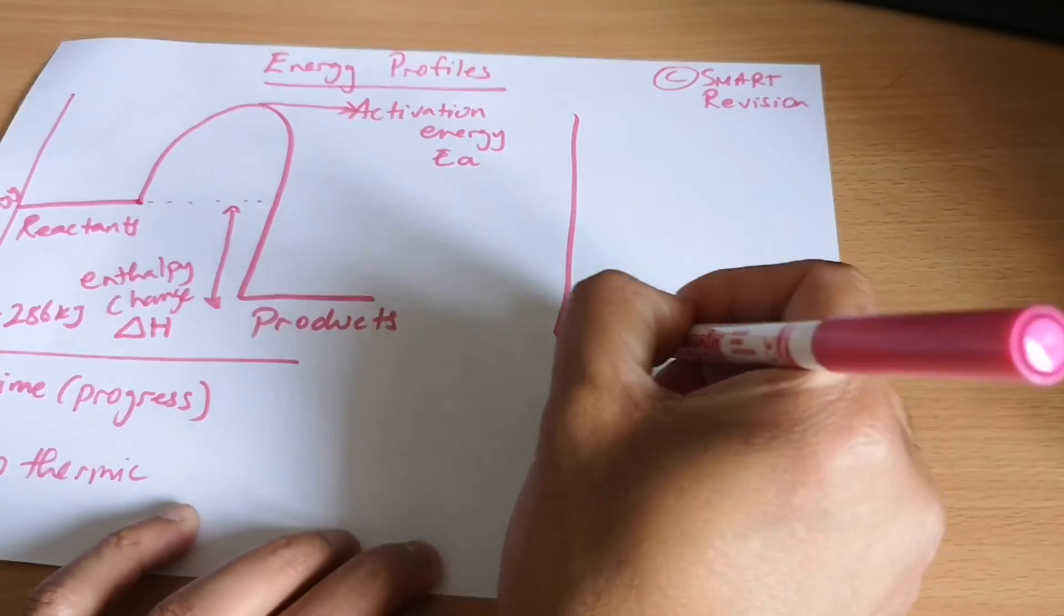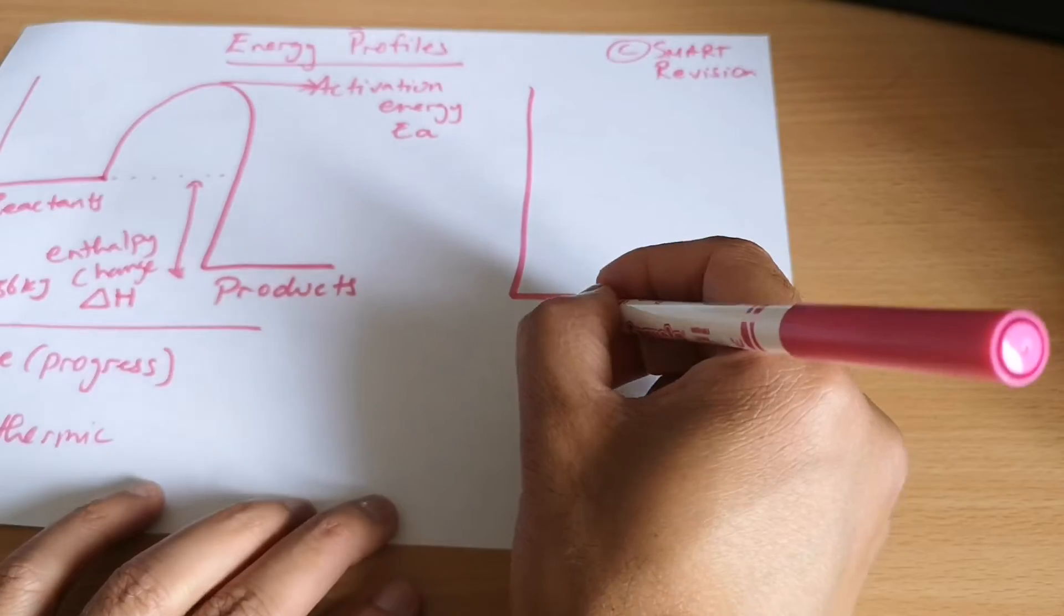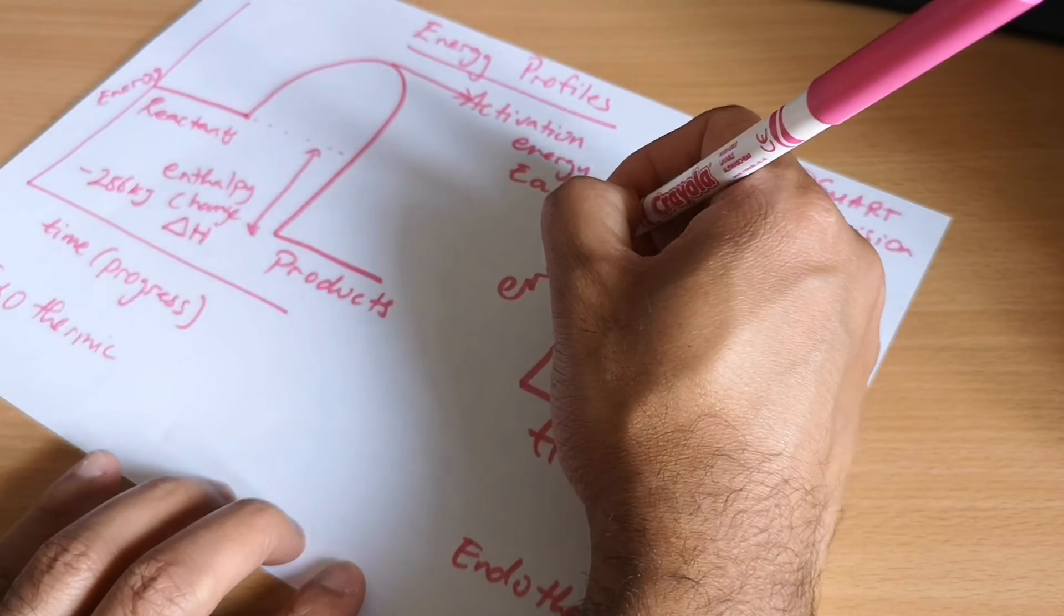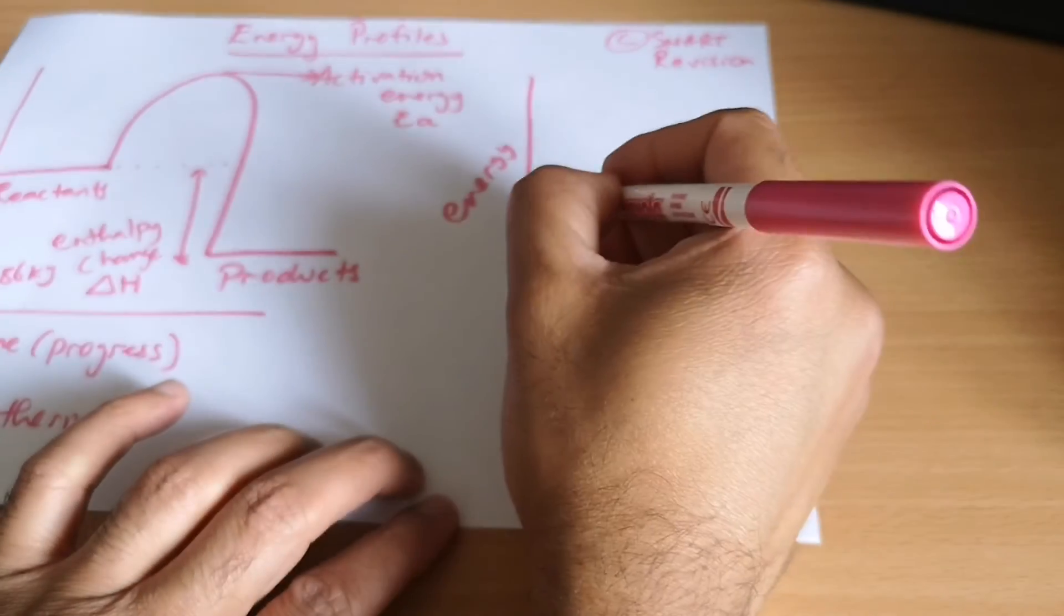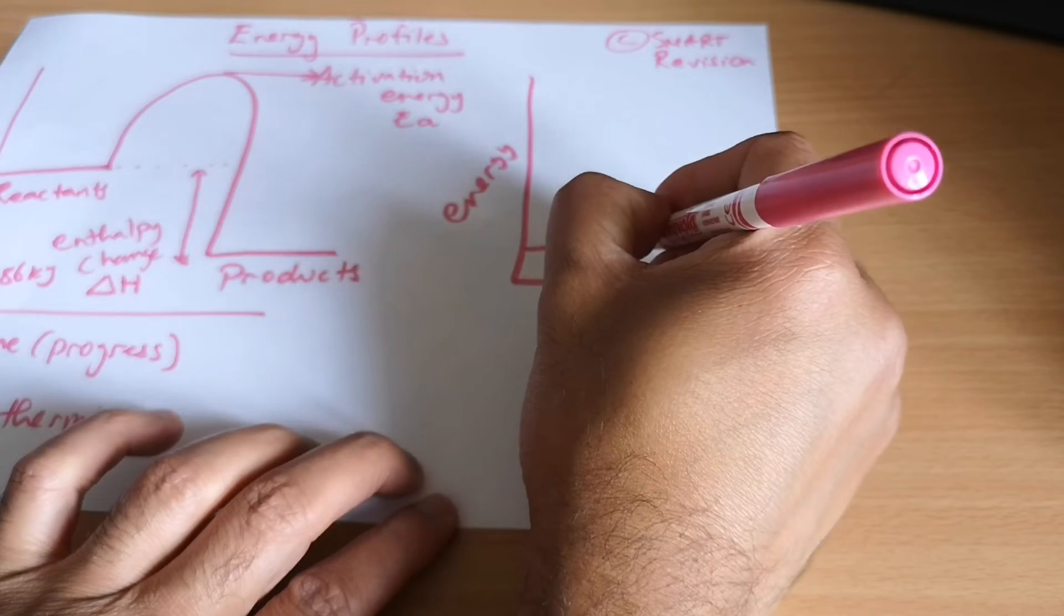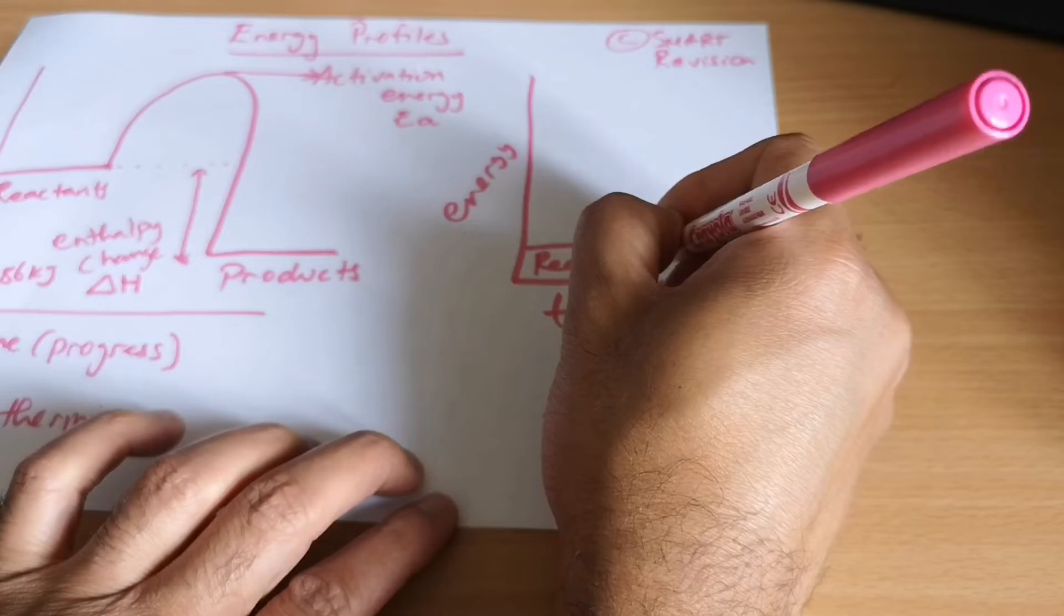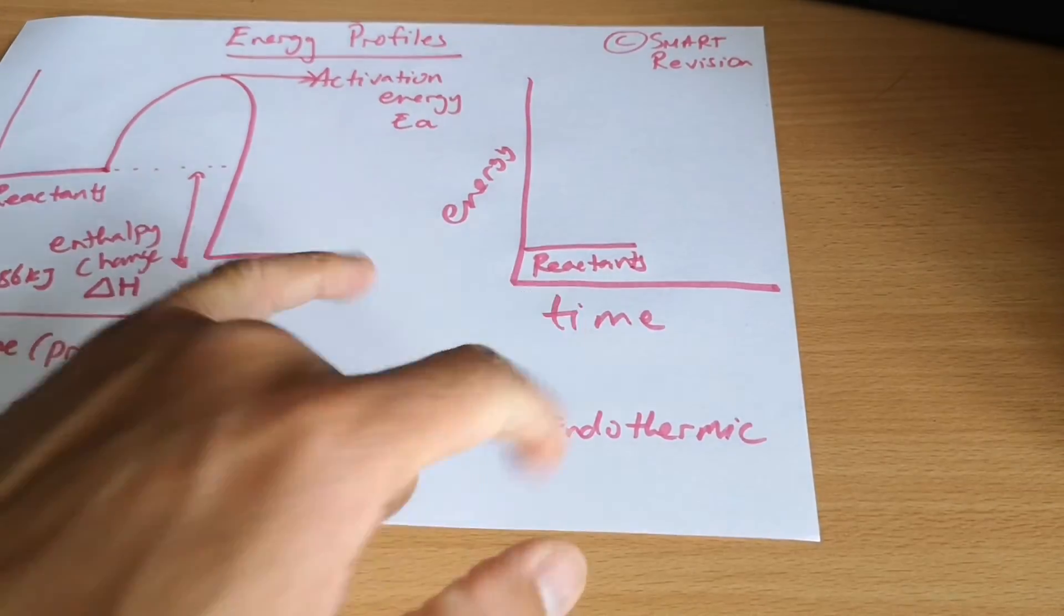Endothermic, now same thing, I'm going to draw that as a graph. I'm going to have time and energy on this side. Now this is going to look totally different. First and foremost, the energy in the reactants is quite low. So if you look at the reactants there and reactants there, they are low.